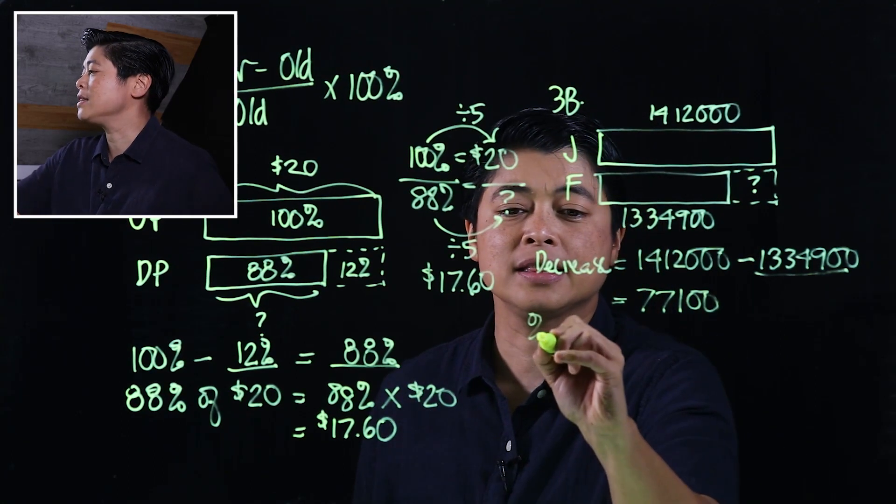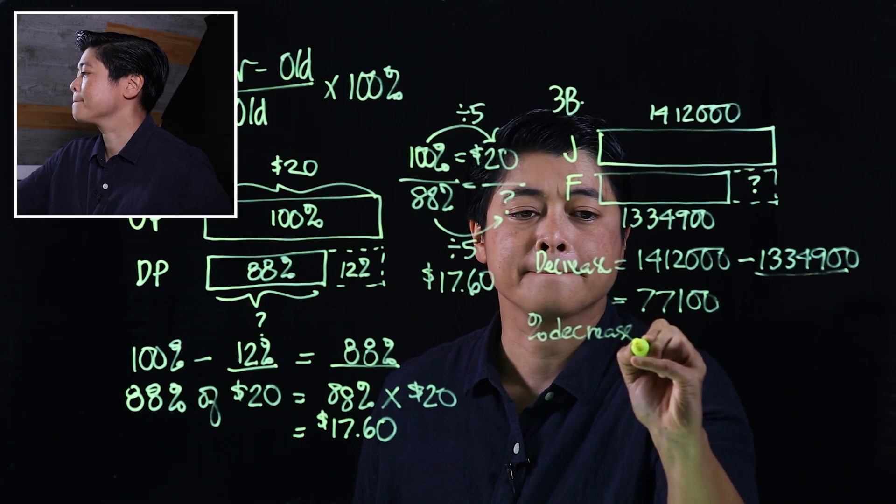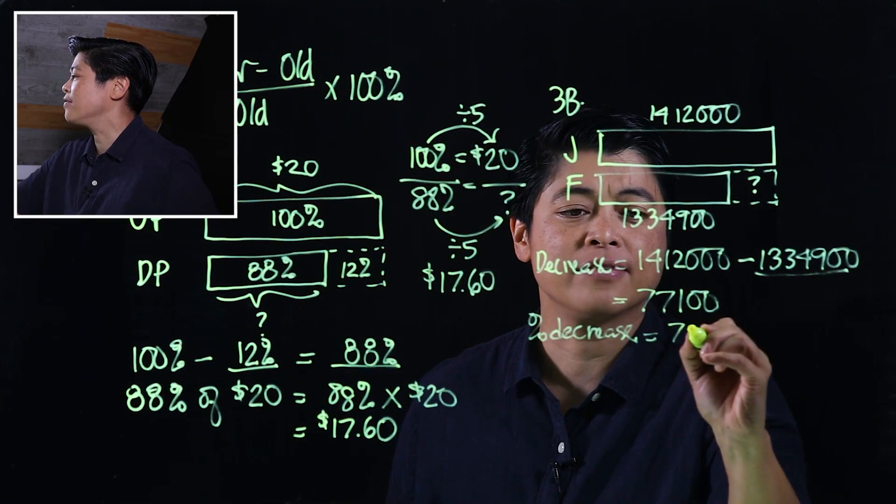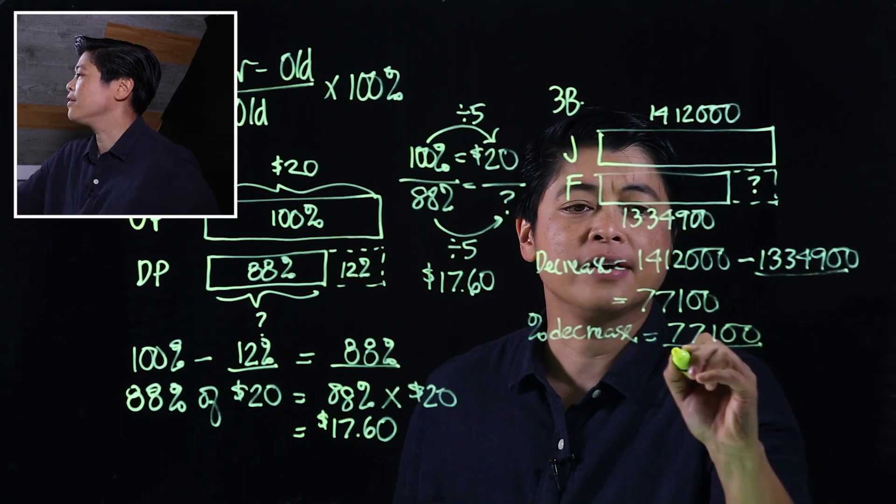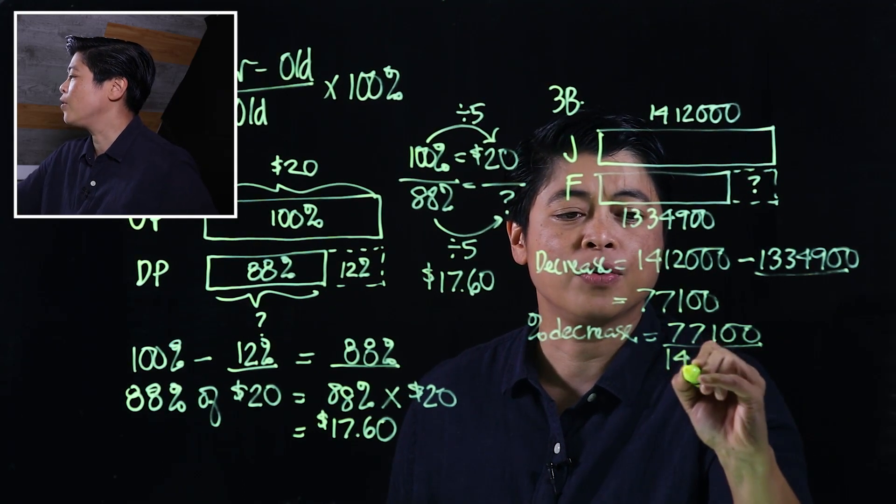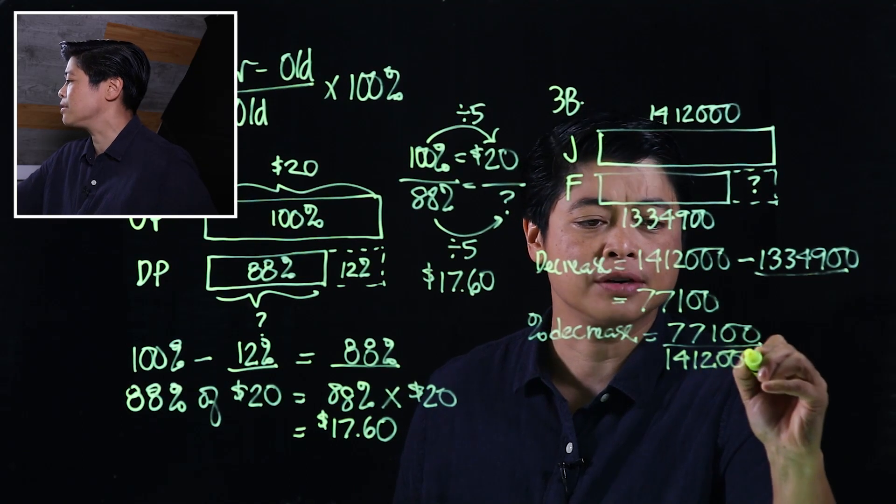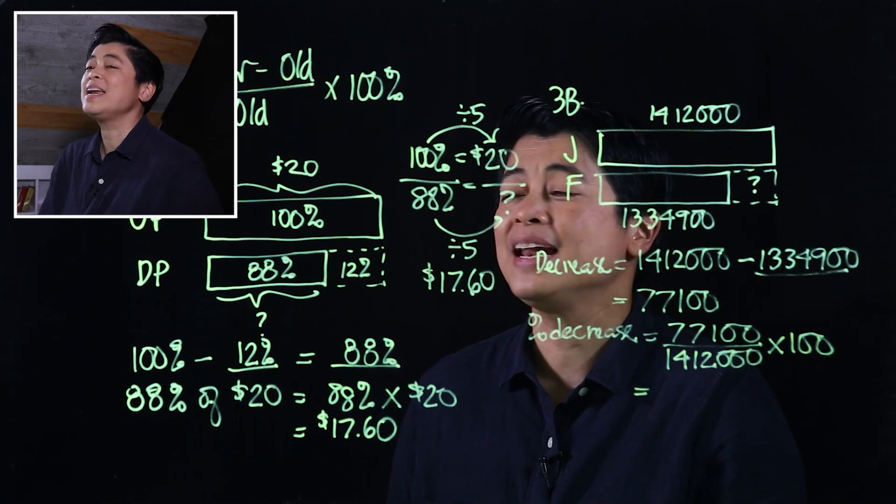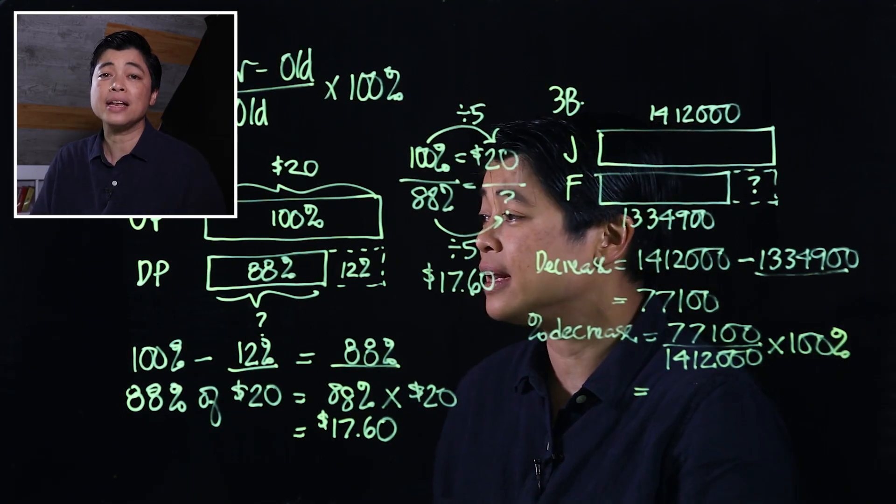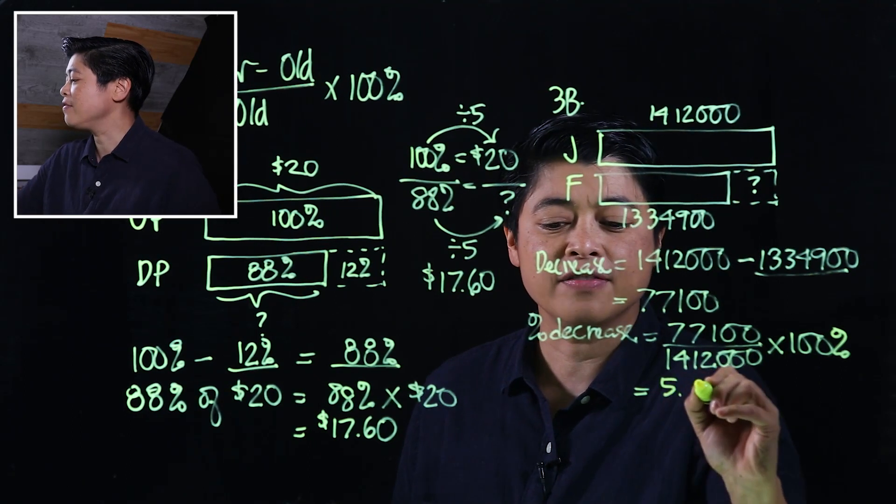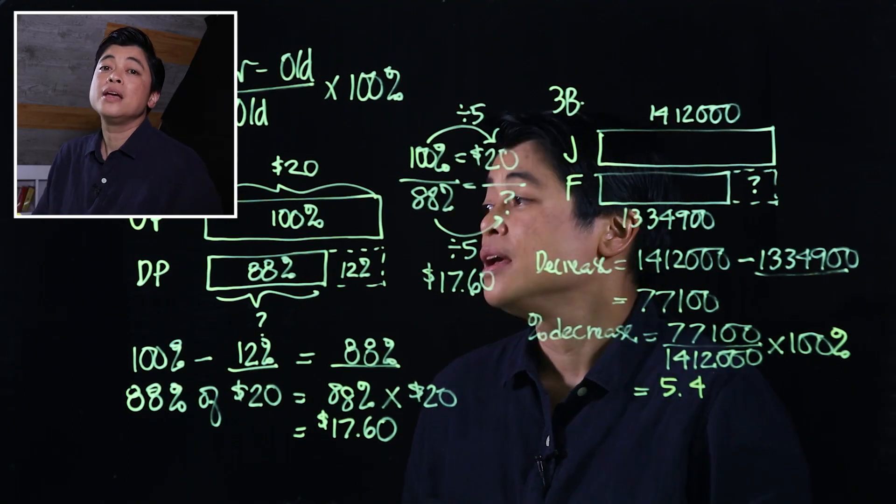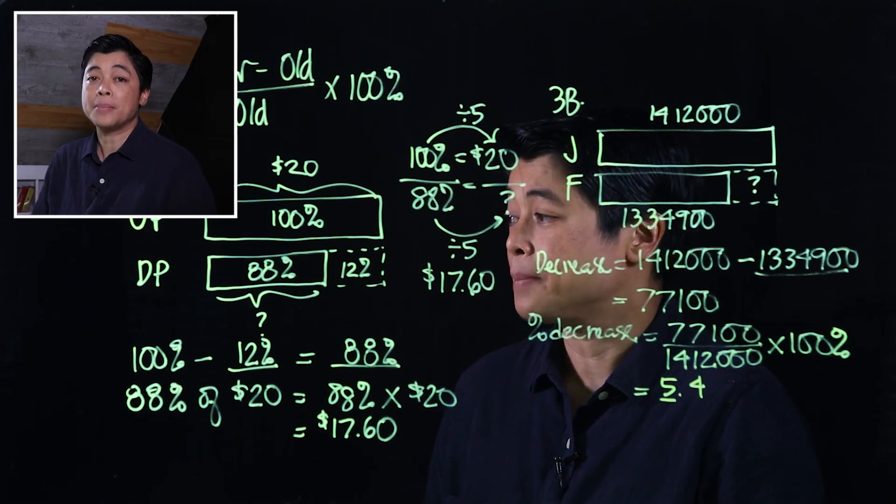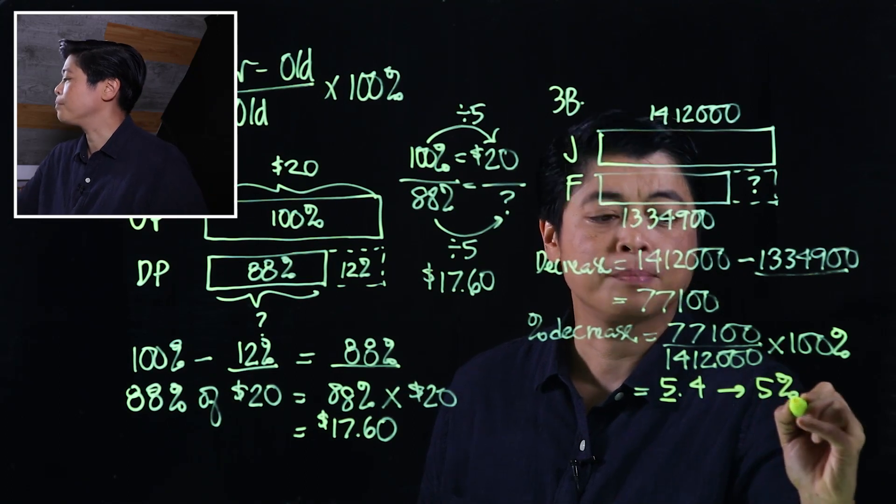Okay, then it says percent decrease equals, so if we take the percent decrease, that's 77,100 divided by 1,412,000 times 100. Okay, if we put that in our calculator, this is percent, if we put that in our calculator, that says 5.4 something something something something. But what we want is round to the nearest whole number. So that means this is 5 percent.